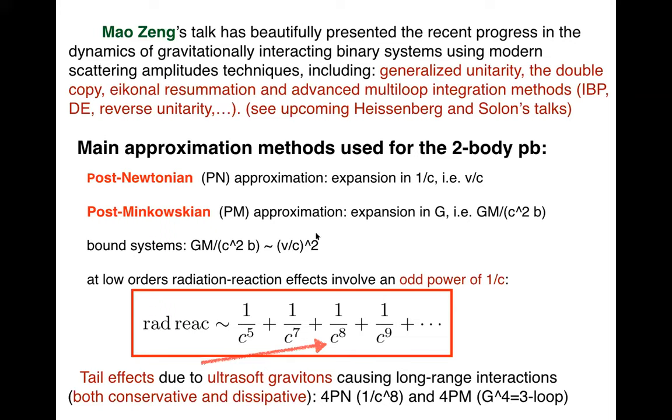Now for LIGO-VIRGO purposes, we are mostly interested in bound systems where there is a relation between the gravitational potential and v/c squared by the virial theorem. We will discuss radiation reaction effects in general relativity. Usually in textbooks people say that radiation reaction effects involve odd powers of 1/c starting with 1/c^5, which is the leading order radiation reaction, then going to 1/c^7. But actually we will see that ultrasoft gravitons or classically what are called tail effects cause long-range interactions which are both conservative and dissipative, including radiation reaction at 1/c^8 level.